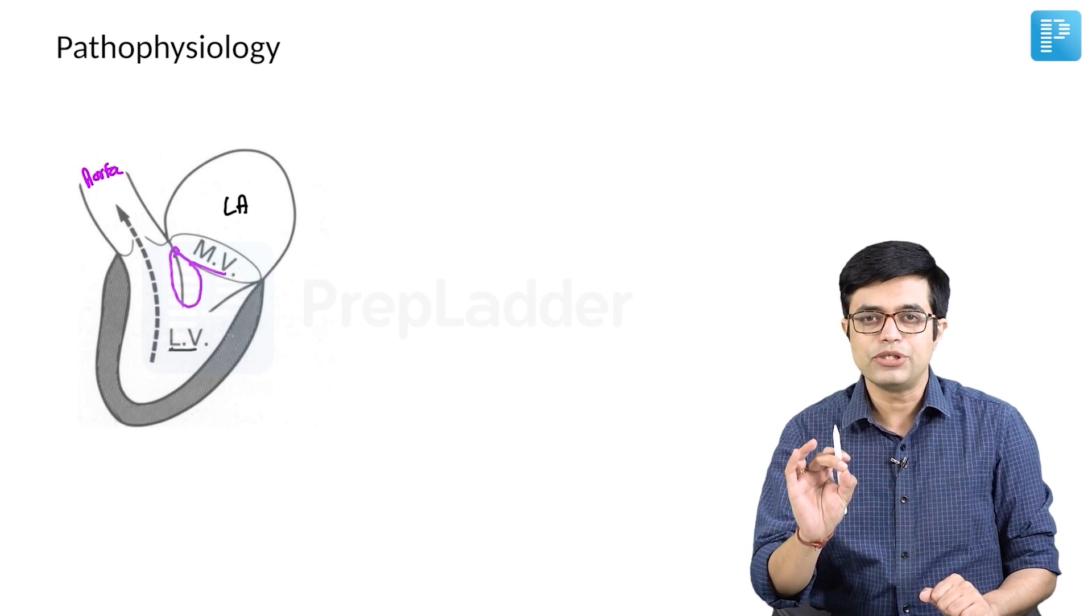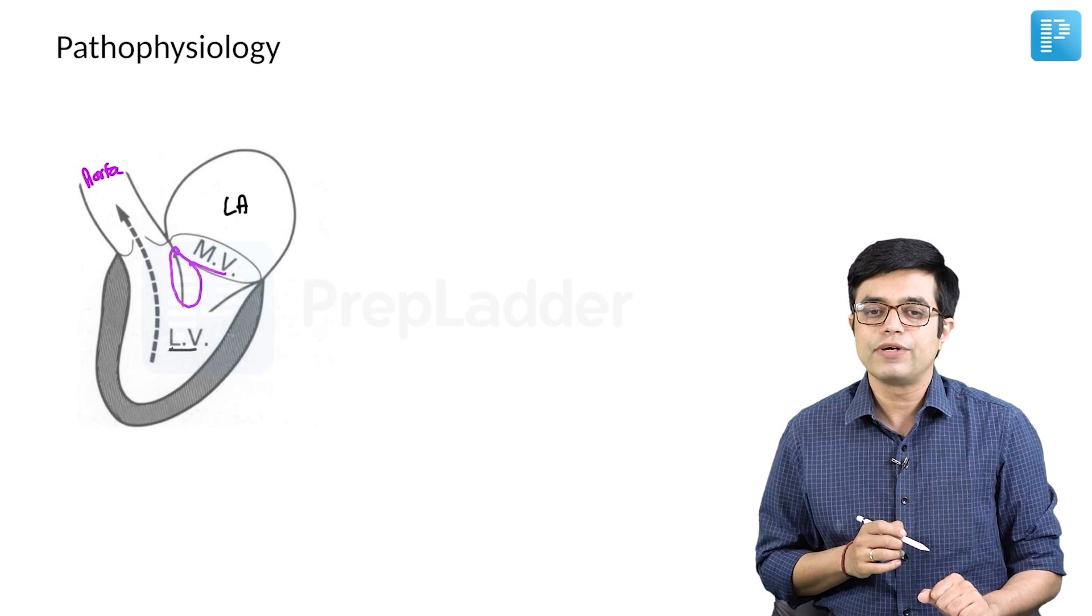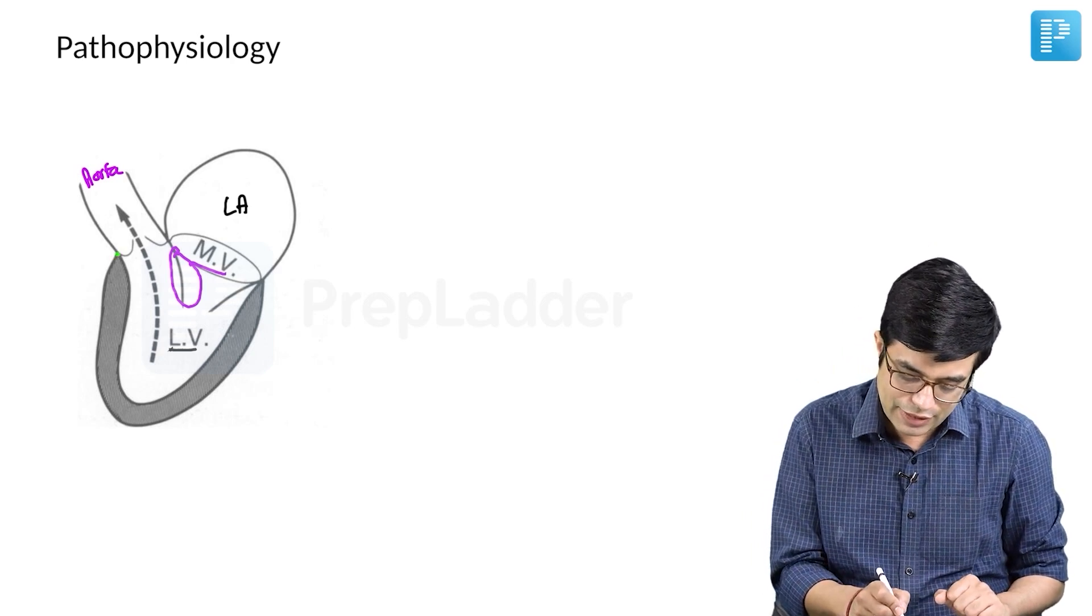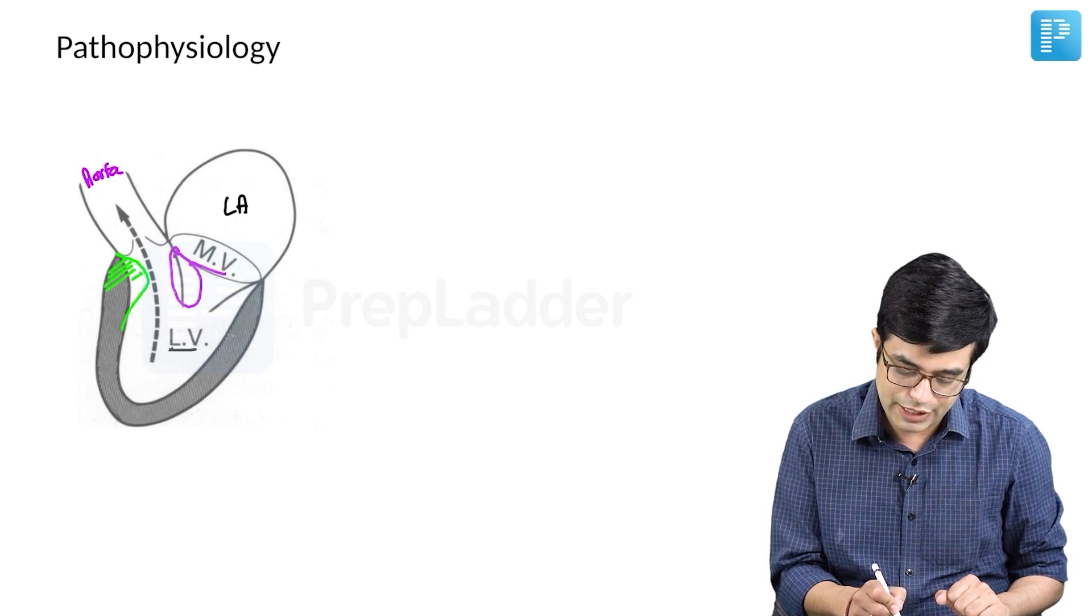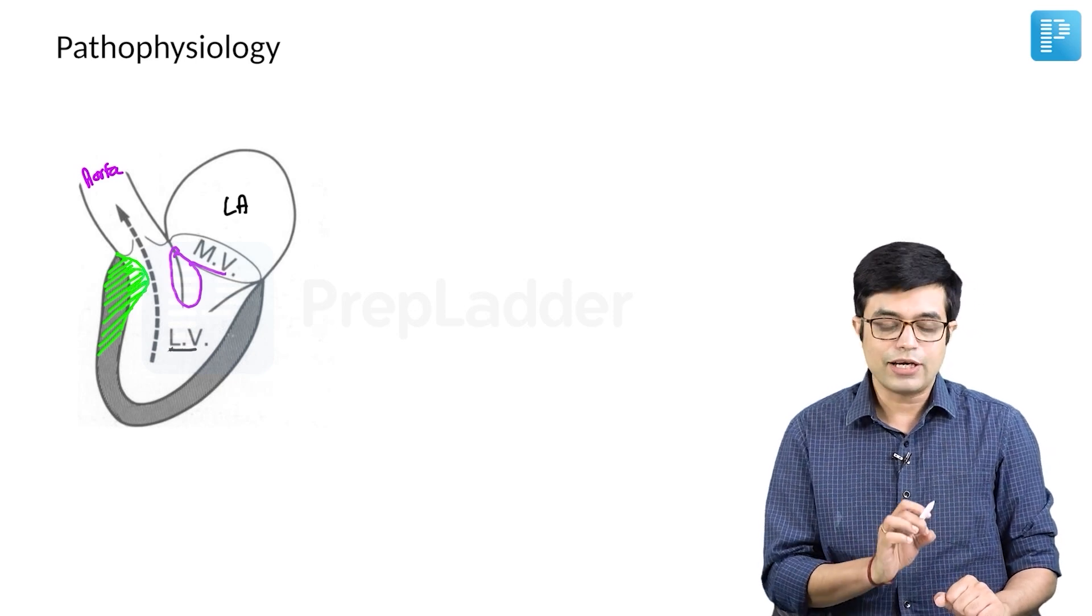Now imagine there is a patient of hypertrophic cardiomyopathy. In hypertrophic cardiomyopathy, what will develop? This asymmetric septal hypertrophy will form. So this segment will become narrow like this. Now with narrowing, what happens?